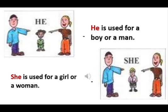'He' is used for a boy or a man. For example, Tarun is a well-mannered boy. Tarun respects teachers and elders. Tarun loves singing. So instead of repeating Tarun, we use 'he': Tarun is a well-mannered boy. He respects teachers and elders. He loves singing.